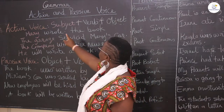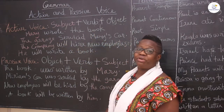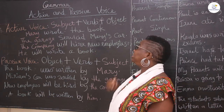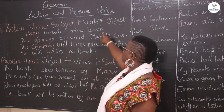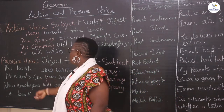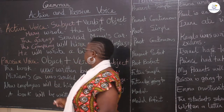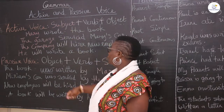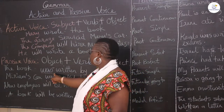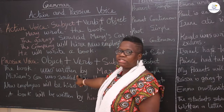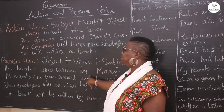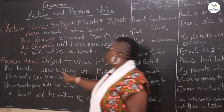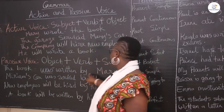So here's an example: 'Mary wrote the book.' How would you put it in the passive voice? The passive voice is as if you're telling a story. It becomes 'the book' — because it's past tense — 'was written,' past participle, 'written by' — by who was it written? By Mary, the subject. So: 'The book was written by Mary.'